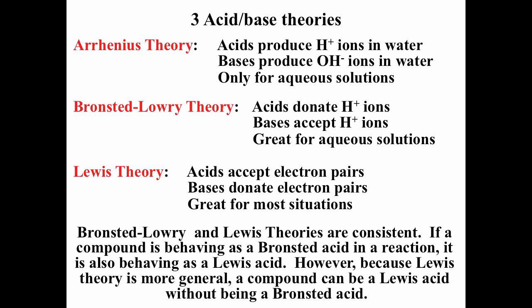For Arrhenius theory, if something's an acid, it's always an acid because the test is what happens when you add it to water. Brønsted-Lowry and Lewis theories are a little different — they look at how a compound behaves in a reaction. For Brønsted-Lowry, if it donates a hydronium ion it's an acid; if it accepts one it's a base. For Lewis theory, if it accepts an electron pair it's classified as an acid; if it donates an electron pair it's classified as a base.